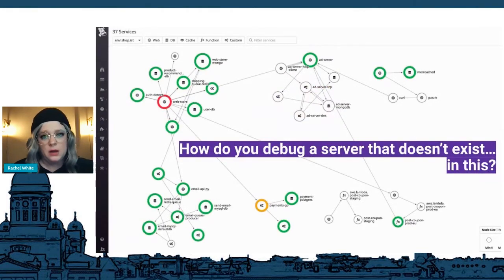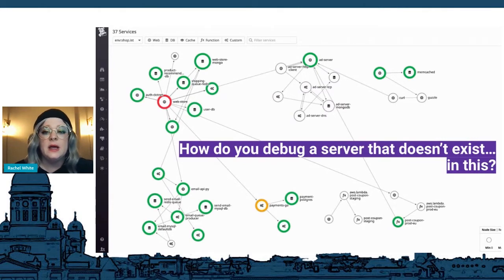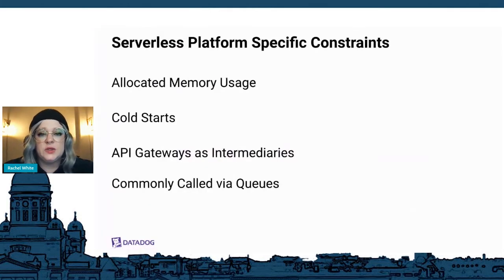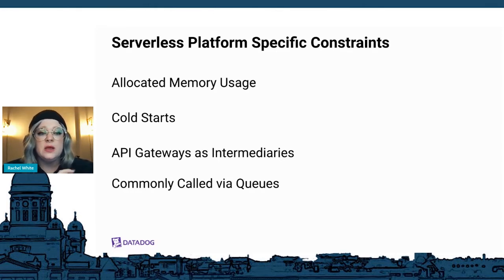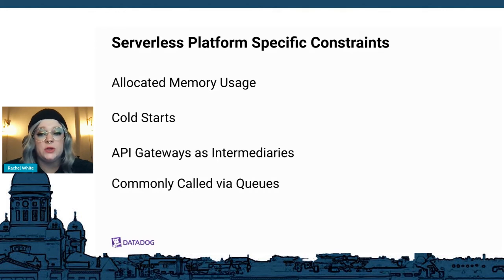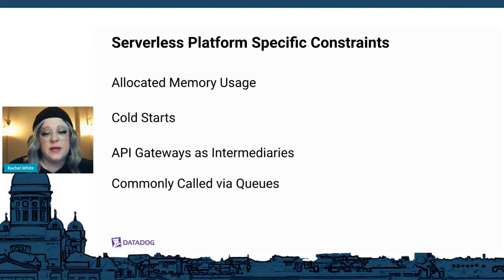Modern infrastructure isn't simple at all — it's not just a server or two for our applications. There are many processes to look at. Serverless has very platform-specific constraints: how much memory to allocate for each request, cold starts which happen when you execute an inactive function, and the delay from your cloud provider provisioning the runtime container. We also have to deal with API gateways as intermediaries.